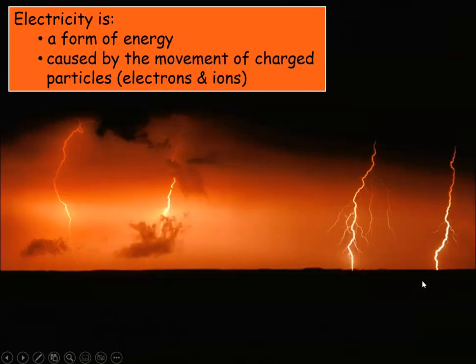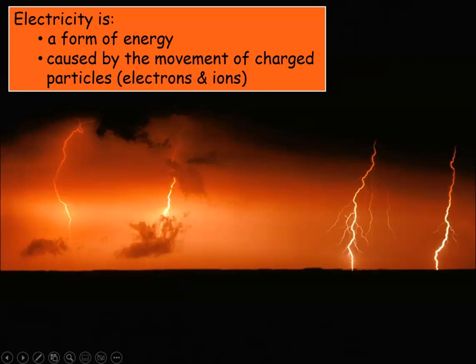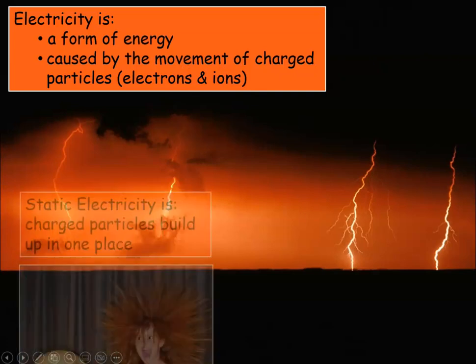So what is electricity? Electricity is a form of energy. It's caused by the movement of charged particles — electrons and ions. We can have charged particles that can move as well. For the most part it's electrons, but we can also have certain charged particles move in certain circumstances.